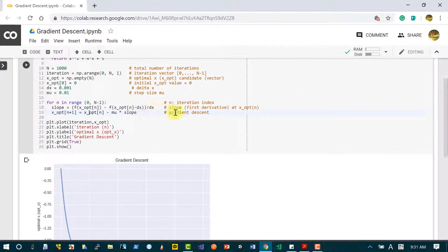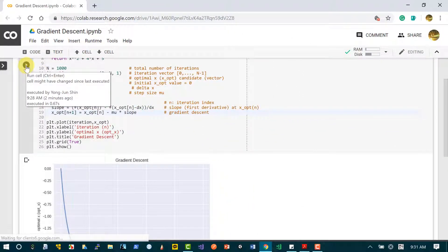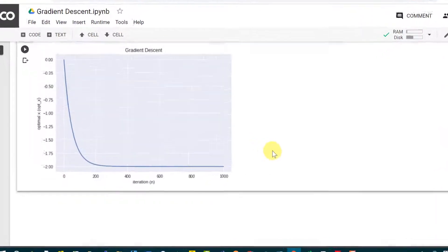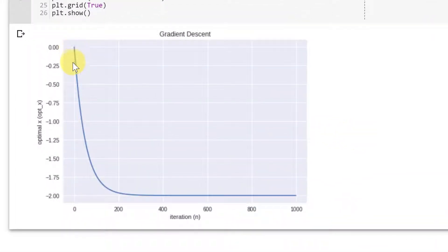So let me run this code and see what happens. So I run the code. And this is what we have. This x_opt decreases and reaches negative 2, which is what we want, right? And we reach this negative 2 around like 400 when the iteration index is 400.